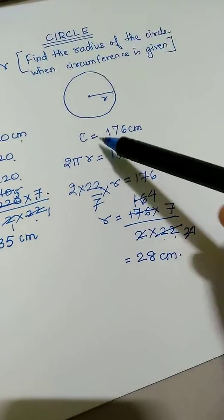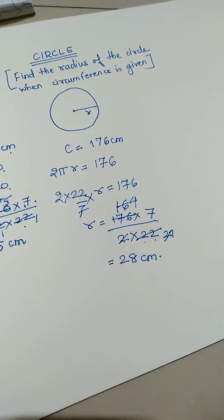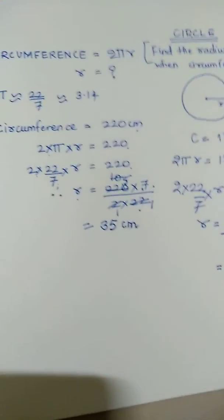So it is very easy to find the radius of the circle when the circumference is given. Thank you.